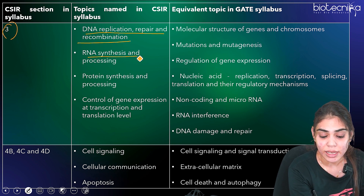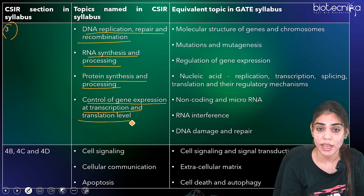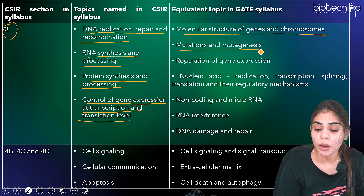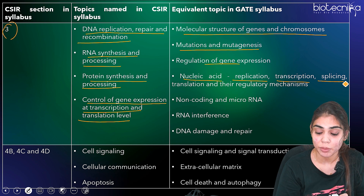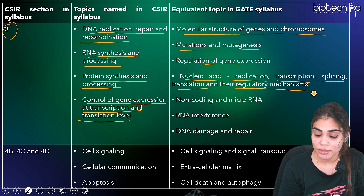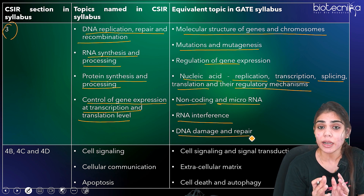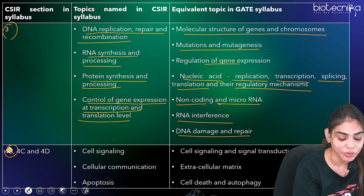Coming to Unit 3 of CSIR, which includes molecular biology: topics such as DNA replication, repair and recombination (3A), RNA synthesis and processing (3B), protein synthesis and processing (3C), and control of gene expression at transcription and translation level (3D) are equivalent to molecular structure of genes and chromosomes under GATE Biotechnology. You also have to learn about mutations and mutagenesis, regulation of gene expression in prokaryotes and eukaryotes, DNA replication, transcription, splicing, translation, regulatory mechanisms, non-coding and microRNA, RNA interference, and DNA damage and repair.